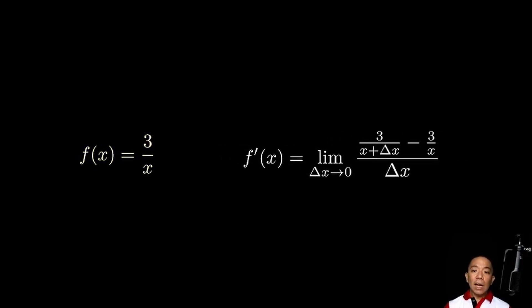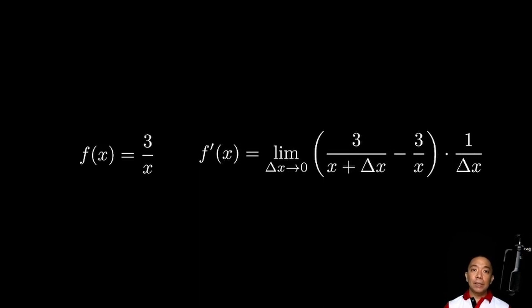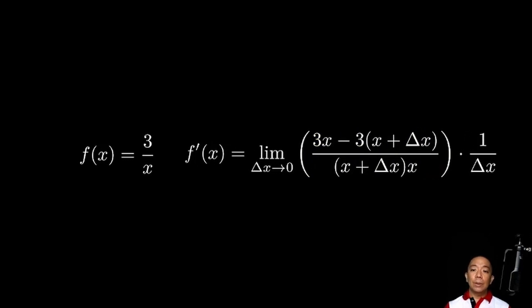So, we could write it now as the limit as delta x approaches 0 of 3 over x plus delta x minus 3 over x all over delta x. Yung delta x sa denominator, ilalabas natin siya as a multiplier na 1 over delta x. Now, we take a look at the values inside the parentheses. Meron tayong dalawang terms that we could combine into a single term. So, the denominator will become x plus delta x times x and the numerator becomes 3x minus the quantity 3 times x plus delta x.